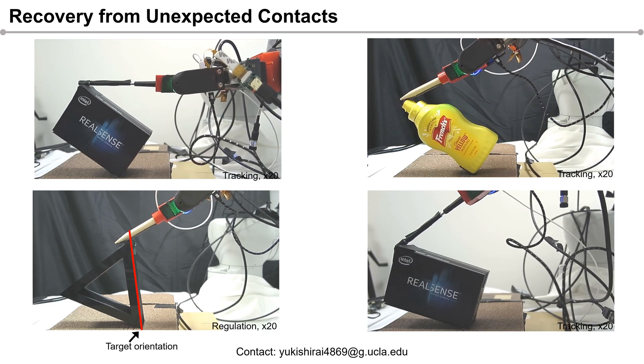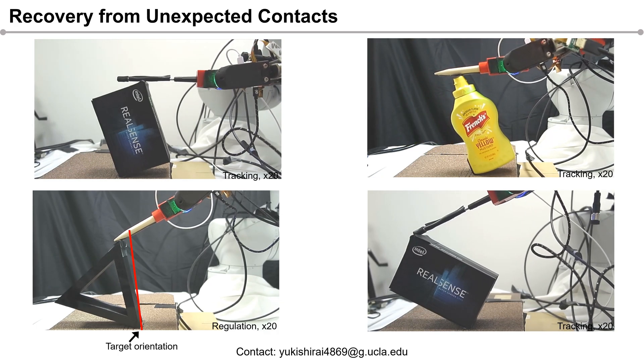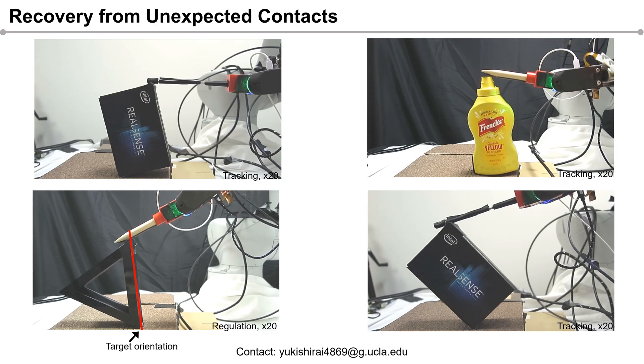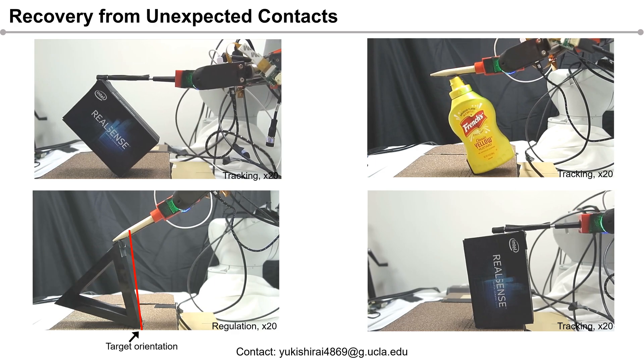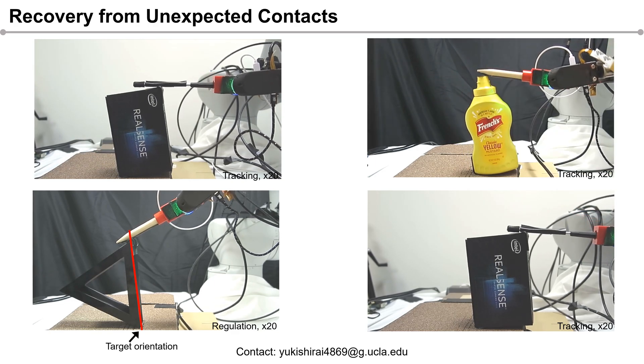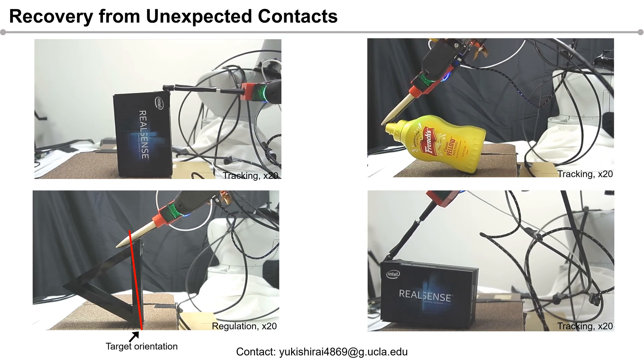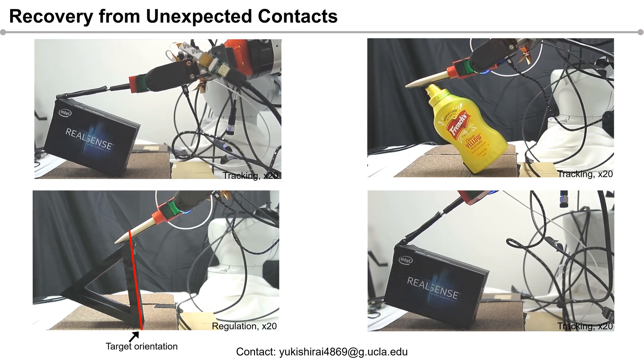Finally, we show the results of the proposed controller under various unexpected disturbances. We verified that our framework could successfully perform tracking of pivoting under several different unexpected disturbances. We also verified the ability of the proposed method for a regulation task. Thanks!